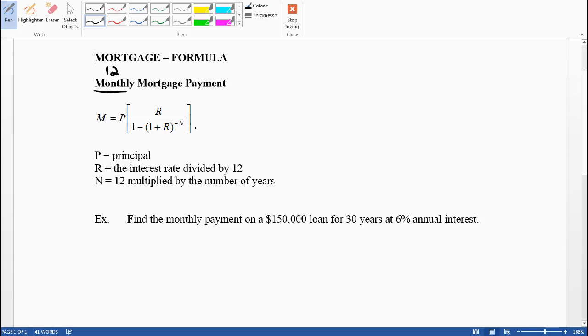The big N is the number of compound periods total for the life of the loan. Since we're doing monthly, that's 12 times a year, so 12 times the number of years. For a typical 30-year loan, that'd be 360 payments. That's all N means - the number of payments.